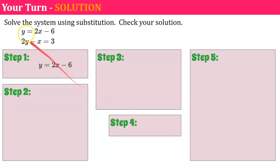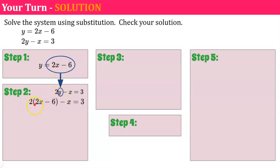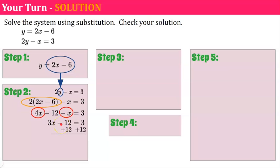Welcome back. Step one: I'm writing down the first equation because it is solved for y — y equals 2x minus 6. Step two: write down the second equation and replace y with 2x minus 6, using parentheses. Distribute: 2 times 2x is 4x, and 2 times negative 6 is negative 12. Combine like terms: 4x and negative x are 3x. Don't forget subtract 12 equals 3.